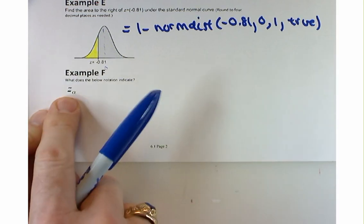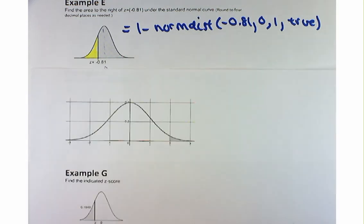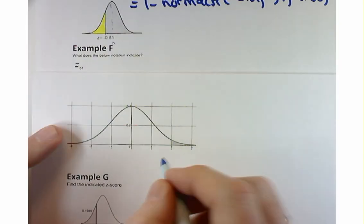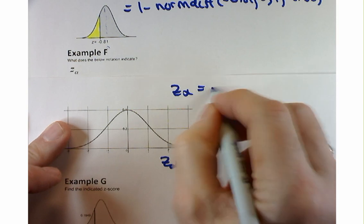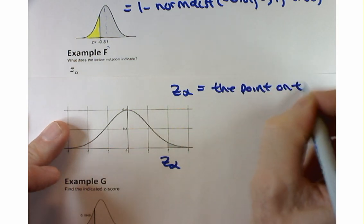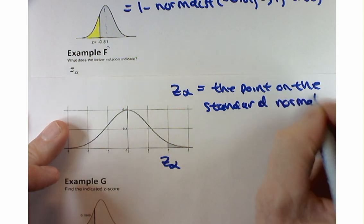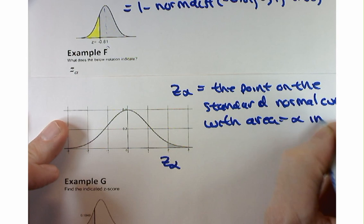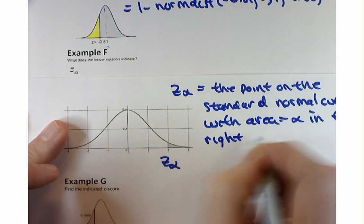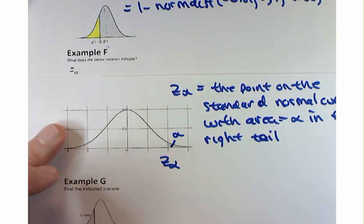So when we left off, we were trying to figure out what Z sub alpha means. Z sub alpha is the point on the standard normal curve with area equal to alpha in the right tail. So basically, this area here is alpha — the area in the right tail.